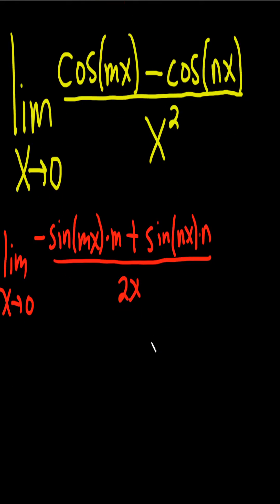And here's the bad part. If we plug in 0, we're going to get 0 over 0 again, because the sine of 0 is 0. So we use L'Hôpital's Rule again.